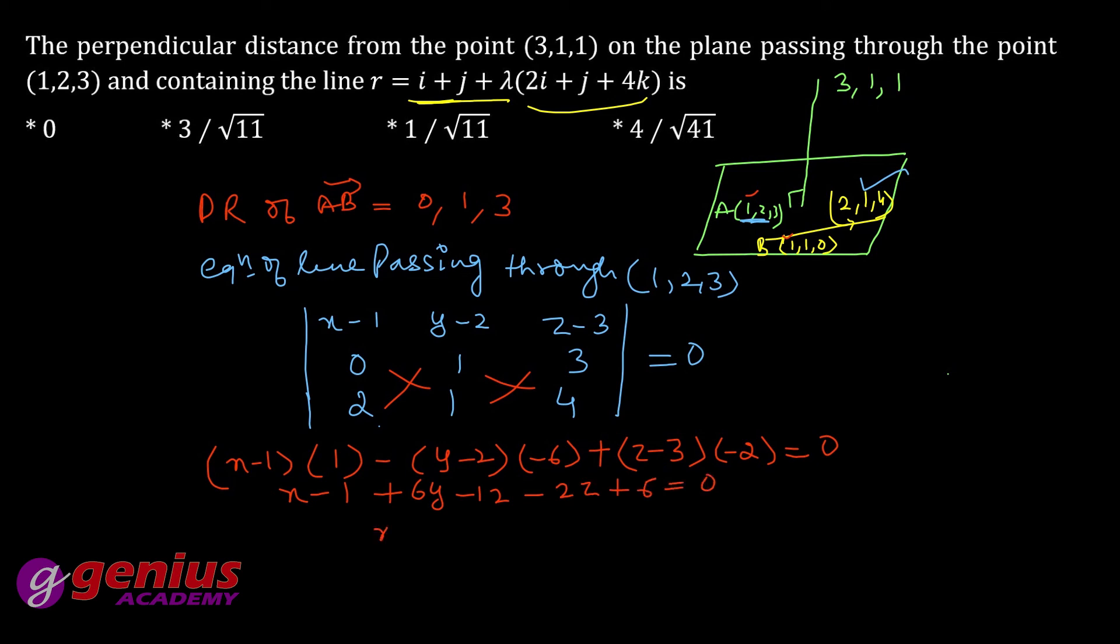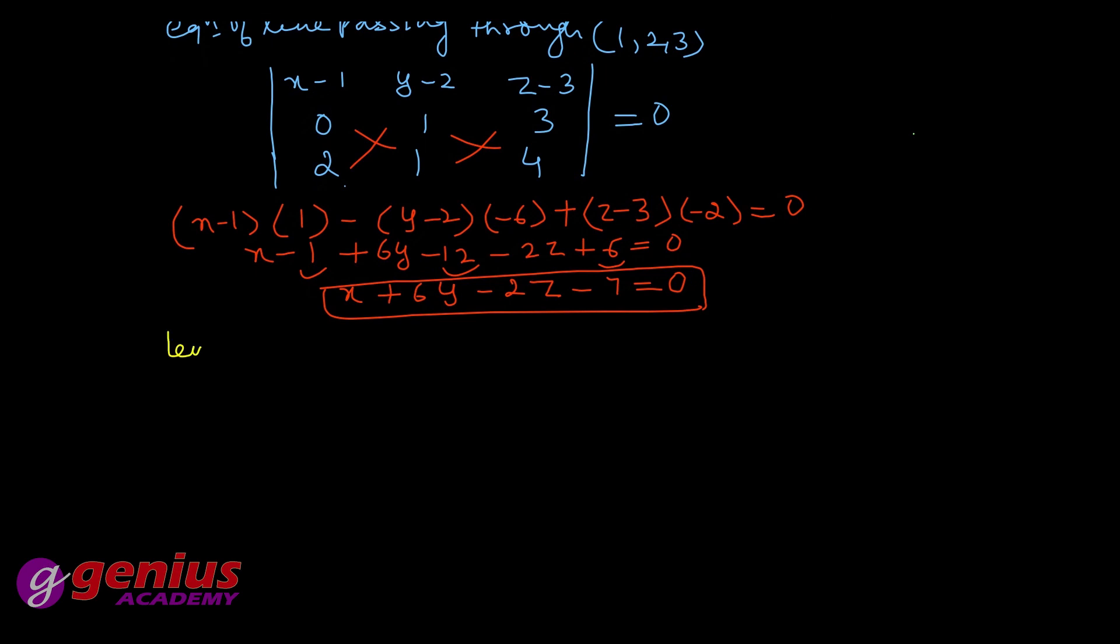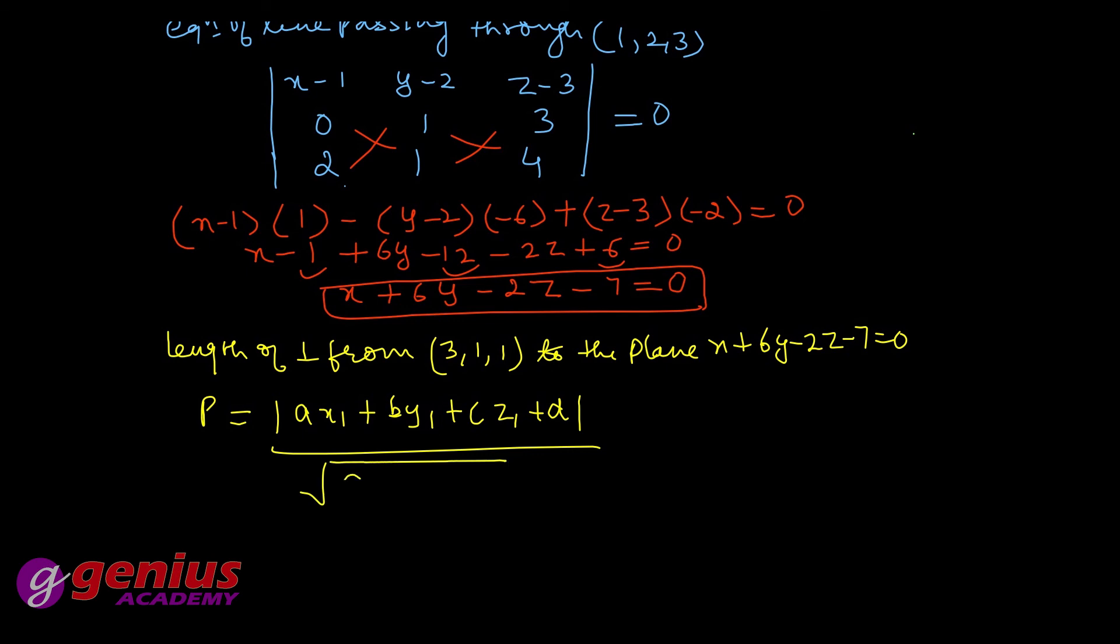Ab meri equation of plane hai kya, 6 plus x minus y minus 2z. Yeh minus one yeh minus twelve or yeh six minus thirteen plus six minus seven equal to zero. This is the equation of plane. Ab dekho formula hota hai length of perpendicular nikalna hai. Length of perpendicular from joh aapke paas point diya hai woh hai 3,1,1. Length of perpendicular from x1, y1, z1 hota hai to the plane. Plane kya hai aapke paas x plus y minus 2z minus 7 equal to zero. Actually formula joh hota hai p is equal to mod of ax1 plus by1 plus cz1 plus d over under root a square plus b square plus c square.